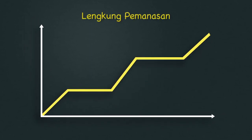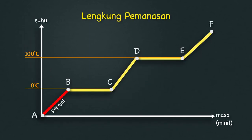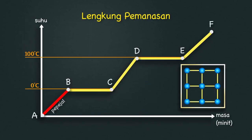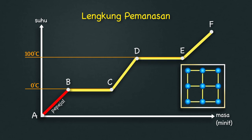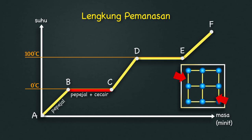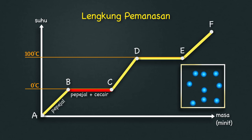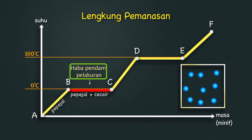Lengkung pemanasan: AB — Haba yang diserap oleh pepejal menyebabkan molekul bergetar lebih cepat. Tenaga kinetik bertambah dan suhu meningkat. BC — Haba diserap untuk memutuskan ikatan antara molekul. Tenaga kinetik tidak meningkat, maka suhu tidak berubah. Fasa pepejal dan cecair dikenali sebagai haba pendam pelakuran.